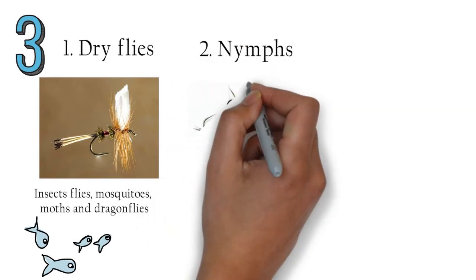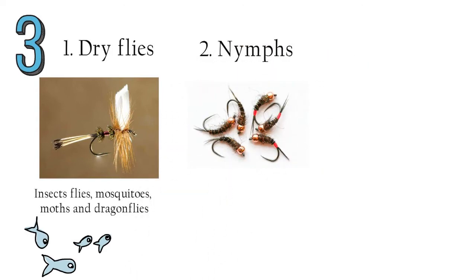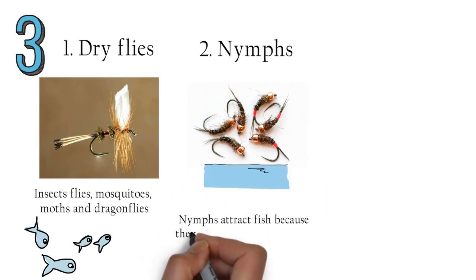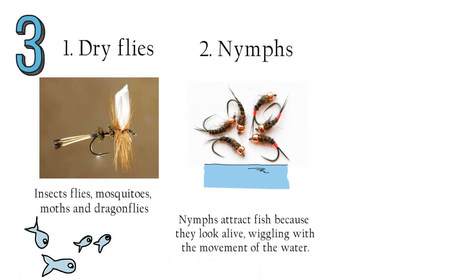Nymphs: these flies look like aquatic insects. Think of small caterpillars, grubs, and worms. They usually float just under the surface of the water. Nymphs attract fish because they look alive, wiggling with the movement of the water.